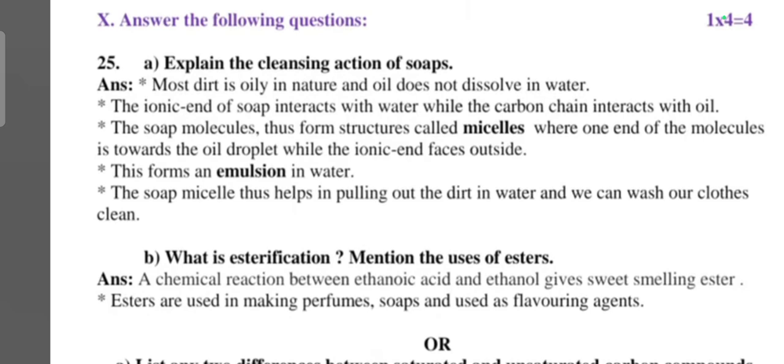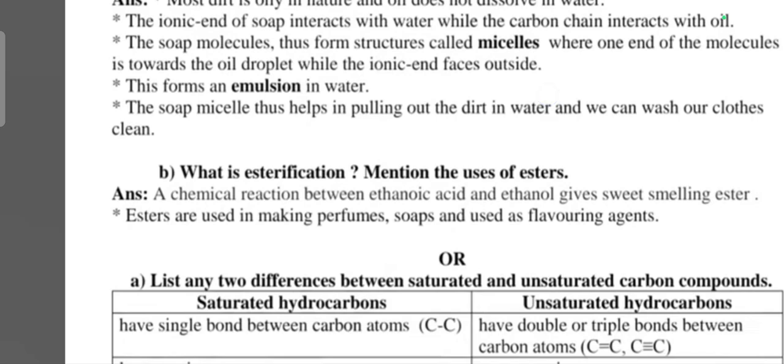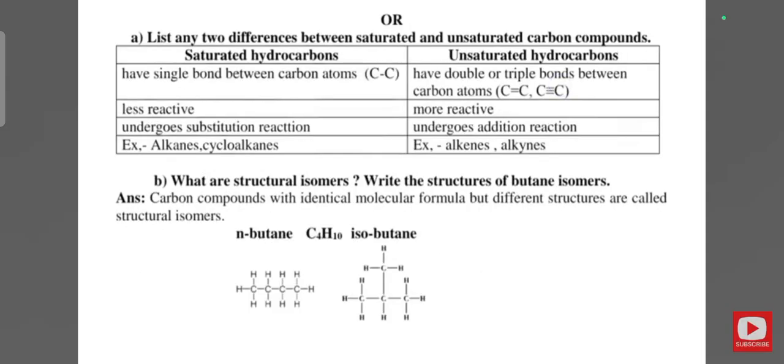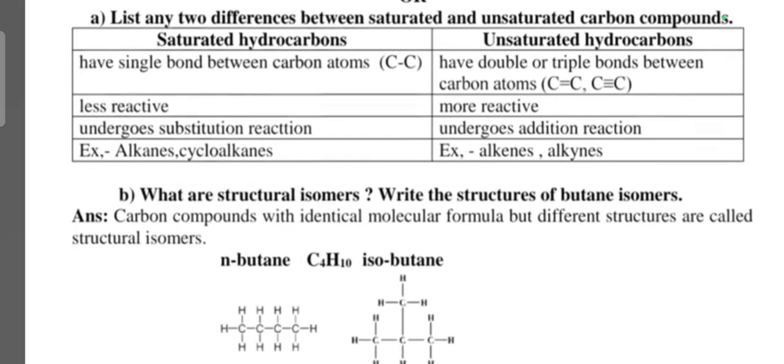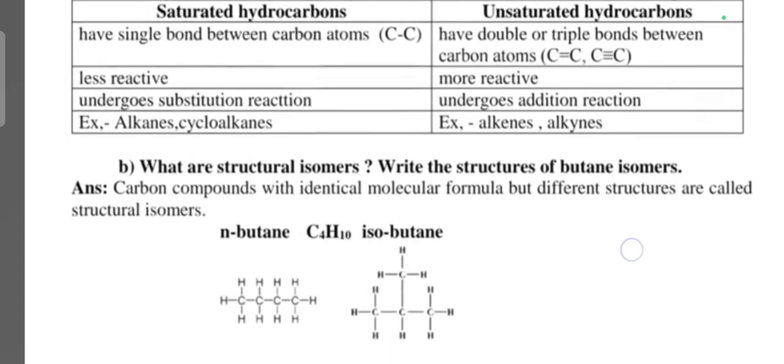What is esterification? Mention the uses of esters. The chemical reaction between ethanoic acid and ethanol gives the sweet smelling ester. Esters are used in making perfumes, soaps, and used as flavoring agents. Or question: what is the difference between saturated and unsaturated carbon compounds? This is the answer. Next, come to: what are structural isomers? Write the structure of butane isomers. Carbon compounds which have identical molecular formula but different structural formula are called structural isomers. N-butane and isobutane, C4H10.